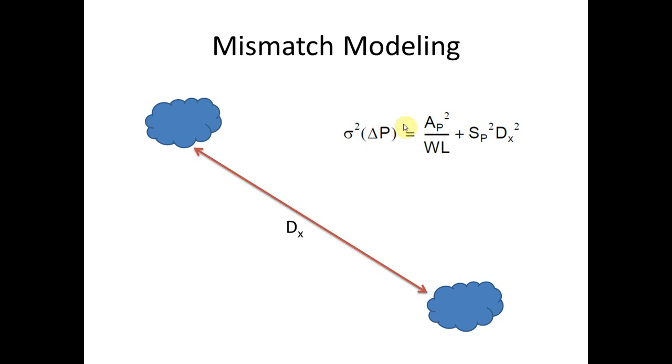So, we see basically this here is the variance of the parameter of interest P, and we see that the variance is inversely proportional to the device area, the width and length of it, whether it's a resistor, a capacitor, a transistor, regardless. And the variance is also proportional to the square of the distance between those devices.